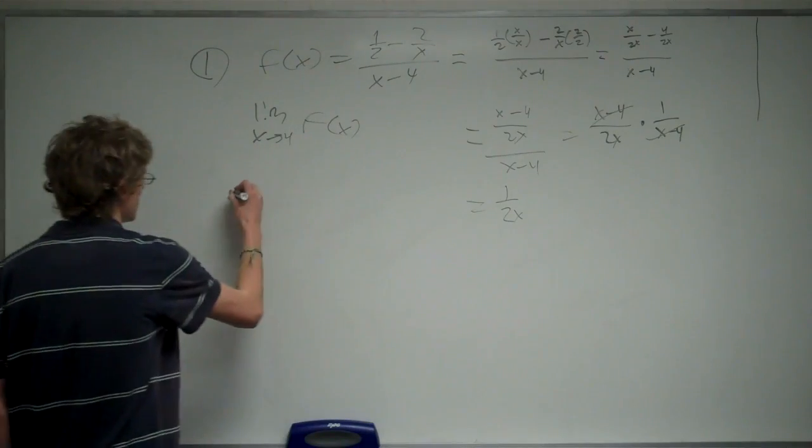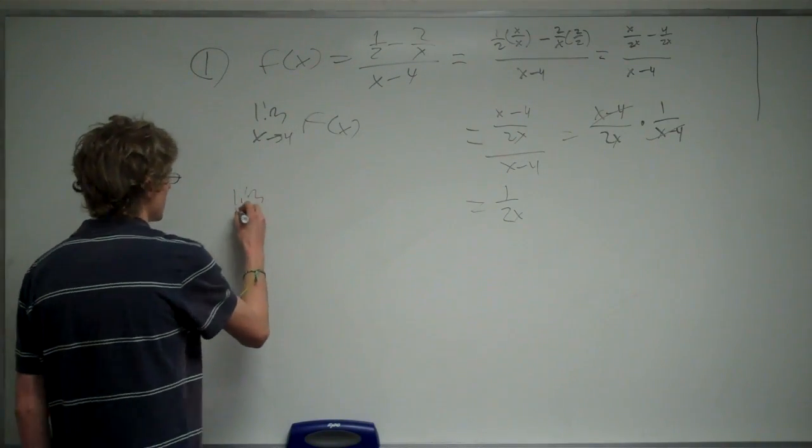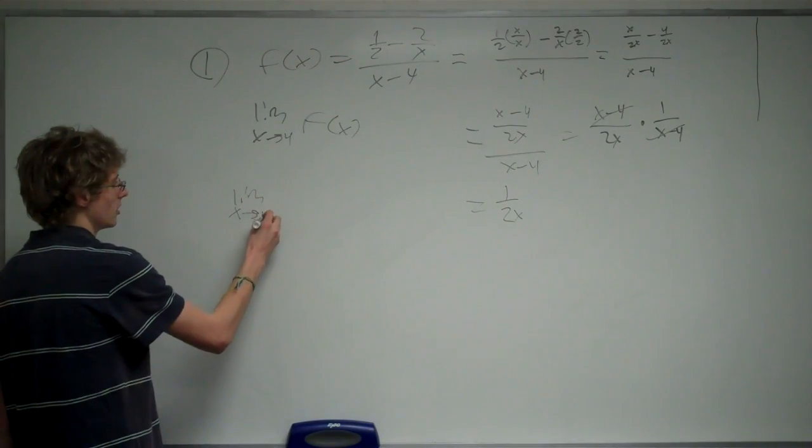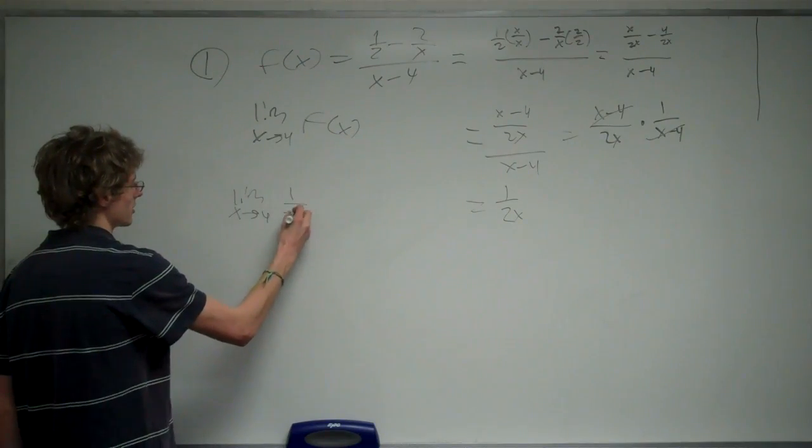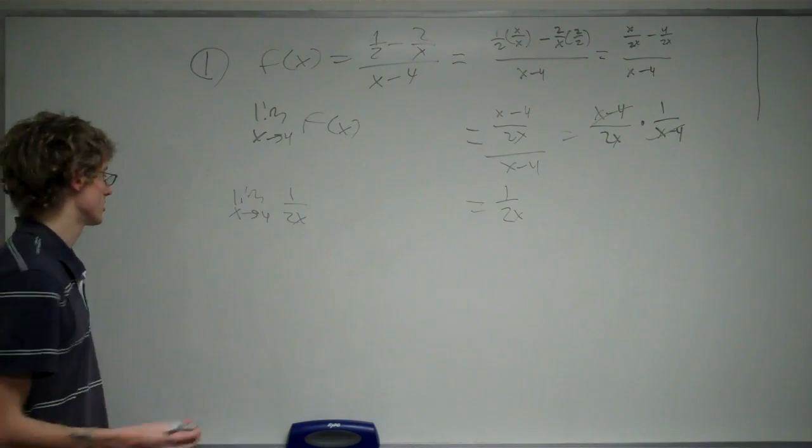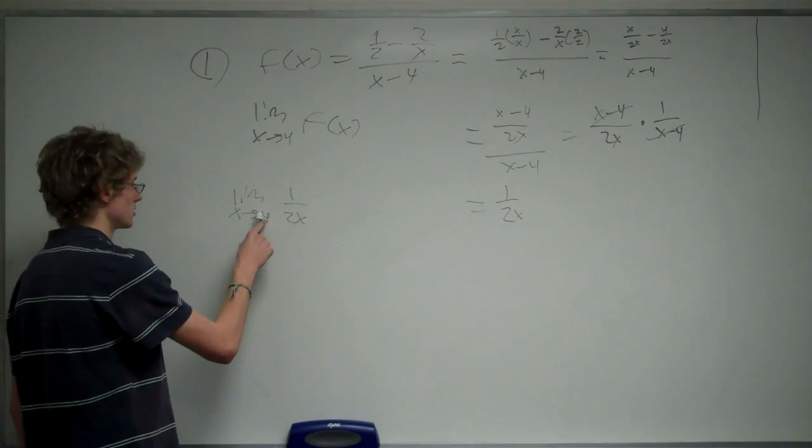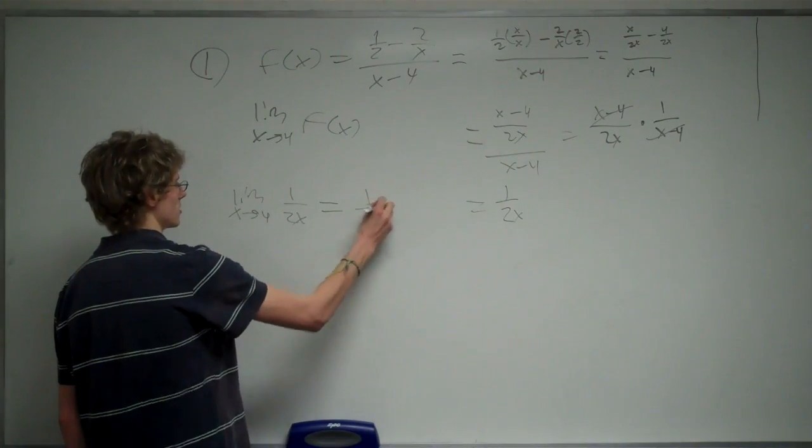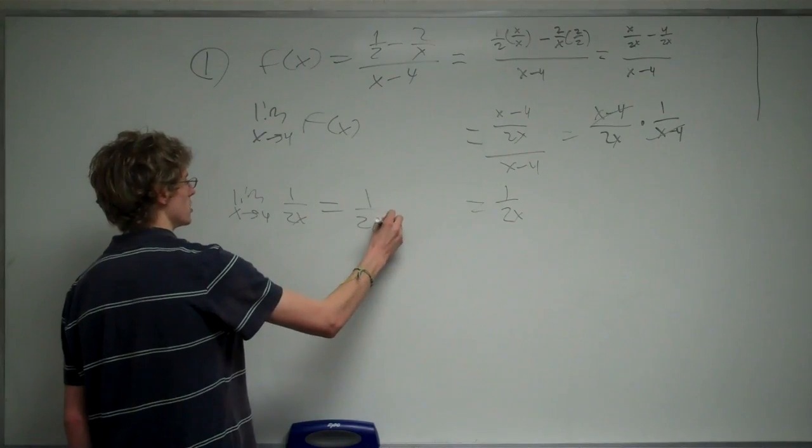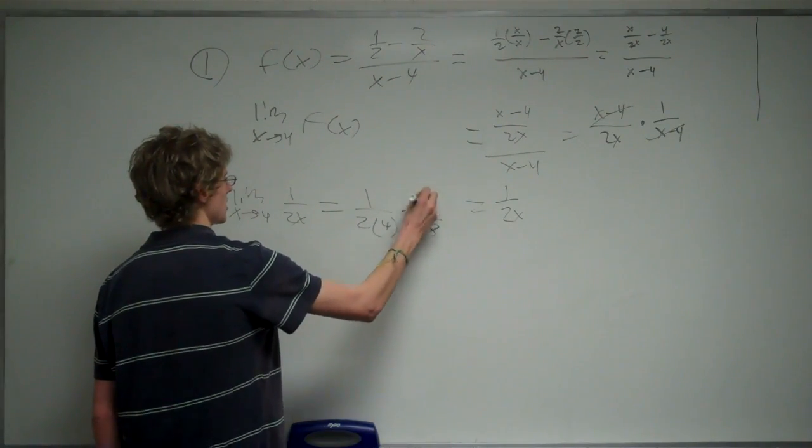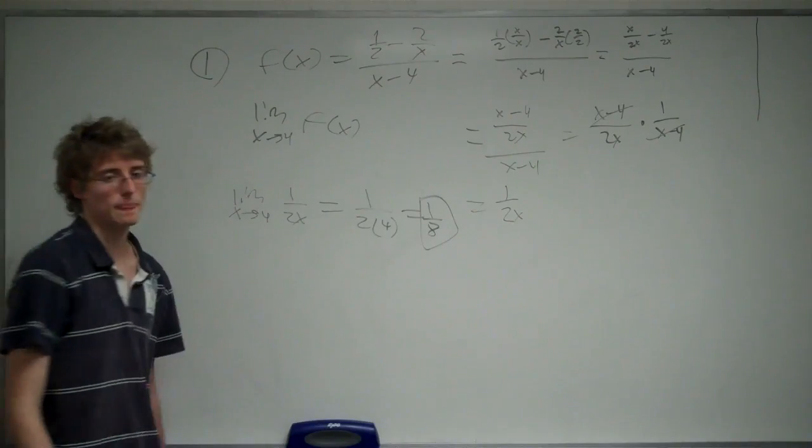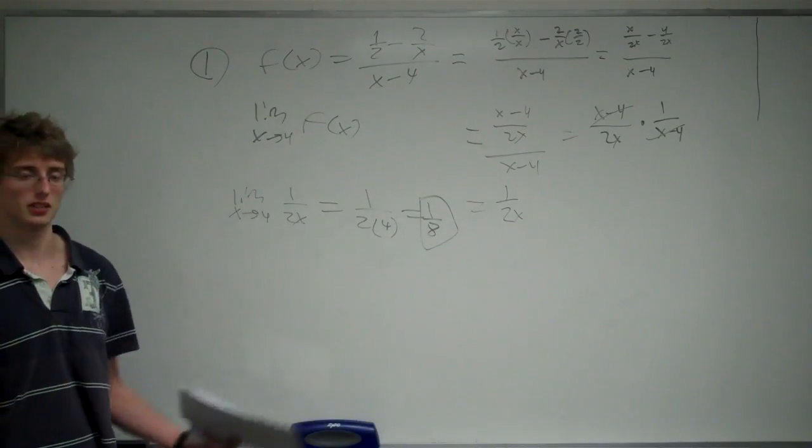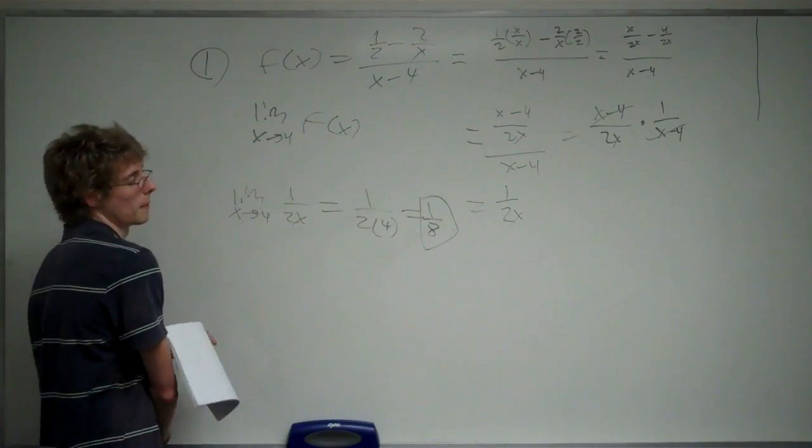Now, the limit as x approaches 4, 1 over 2x, is fairly simple. We're just going to take this 4 and plug it in for x. And that's going to give us 1 over 2 times 4, which is 1 over 8. So, 1 over 8 is our answer for question number 1.